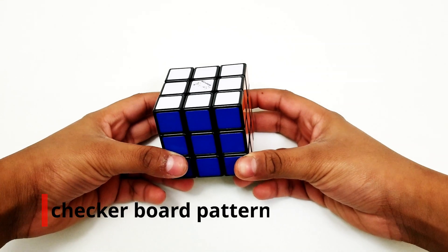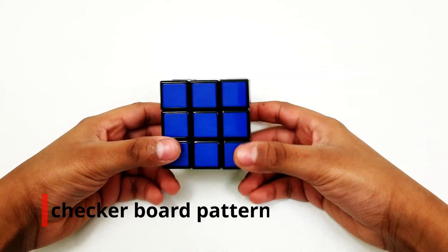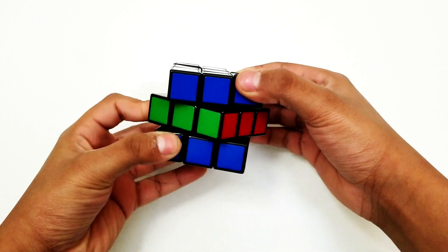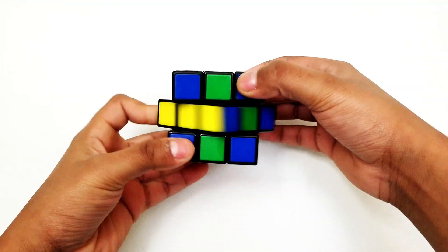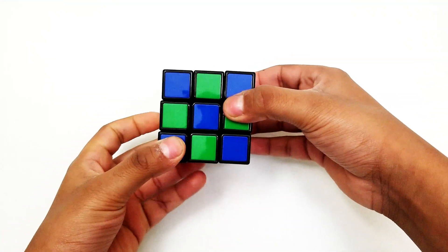First, let's do the checkerboard pattern. Hold your cube like this and spin the middle layer twice. Then turn the cube and spin the middle layer twice again.